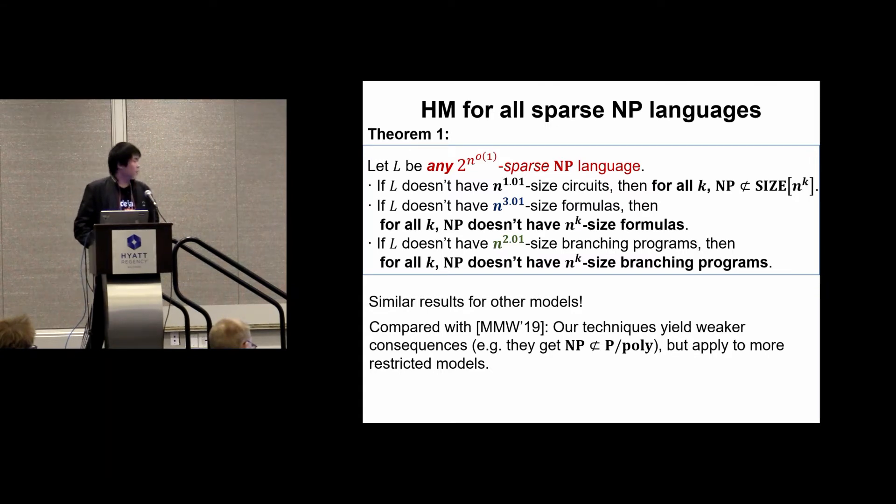We can compare this with the previous results by McKay, Murray, and Williams on MCSP. Their theorems have consequences like NP not in P/poly, while we could only get NP not in size n^k for all k. However, our techniques are more fine-grained and can apply to more restricted models, such as formulas and branching programs, but their techniques cannot.